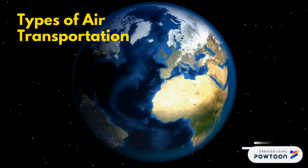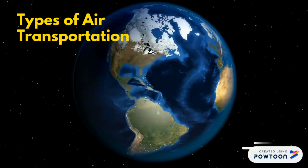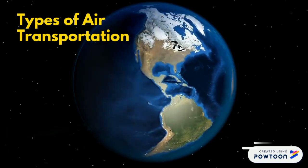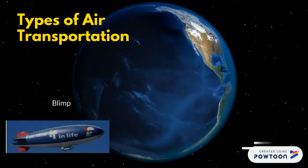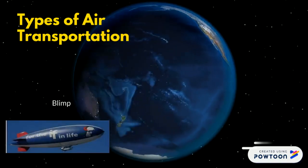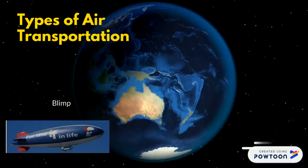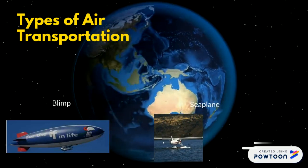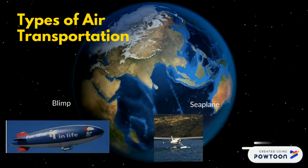Here are a couple other types of air transportation. Blimps — blimps are used to advertise for businesses. And the seaplane — seaplanes can fly in the sky and they land on the water.